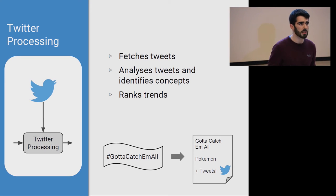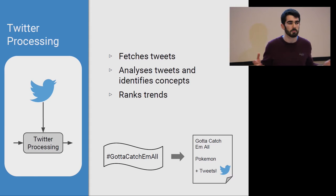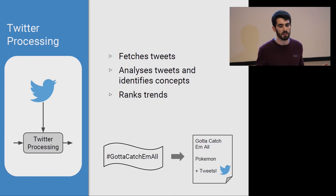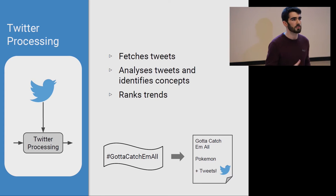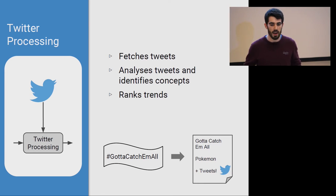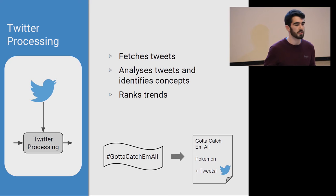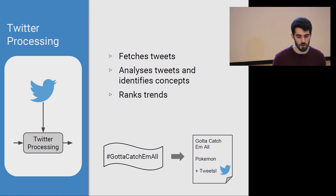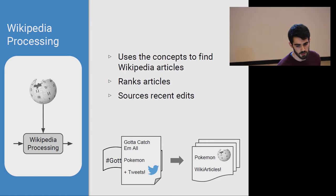So what happens to our example? Well, it realises hey, a lot of people are tweeting about this Pokemon thing when they tweet this hashtag. It adds that to the list of concepts along with some other stuff, gets a sample of tweets that we can display later, and then passes it along to the Wikipedia processing module.